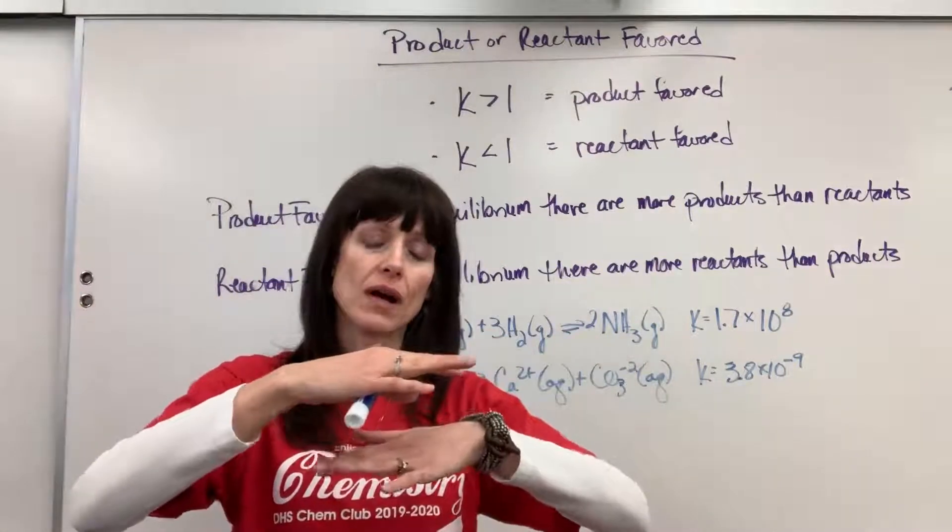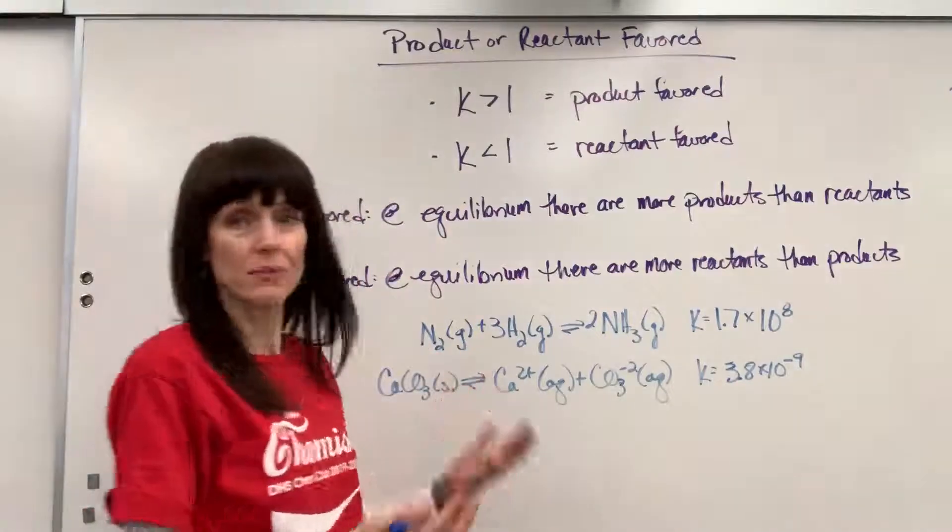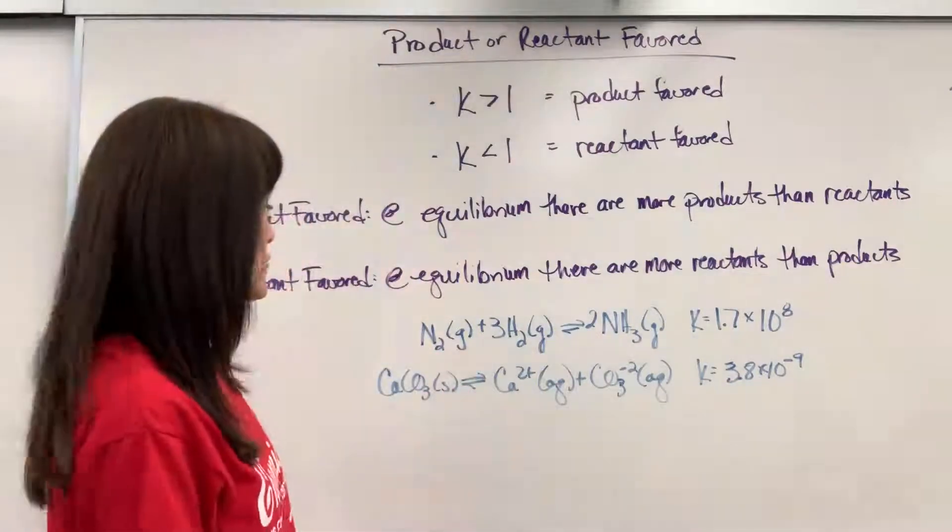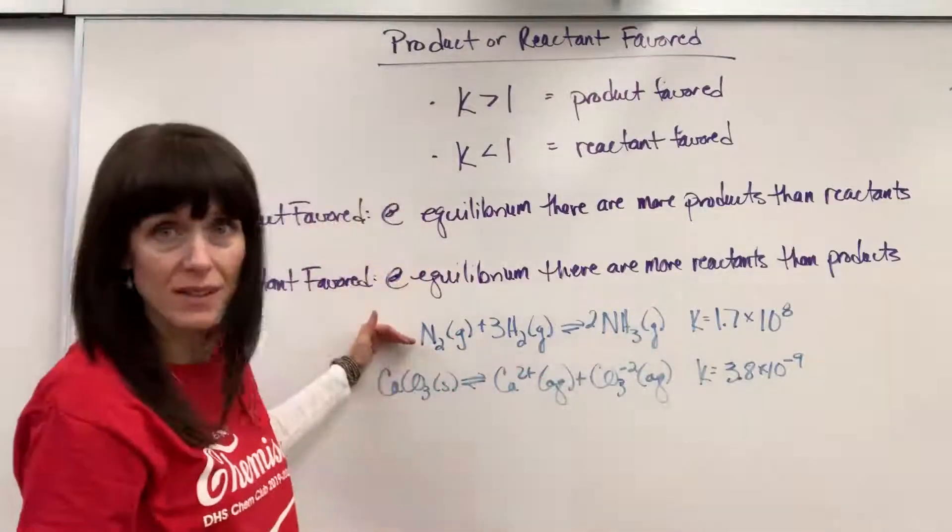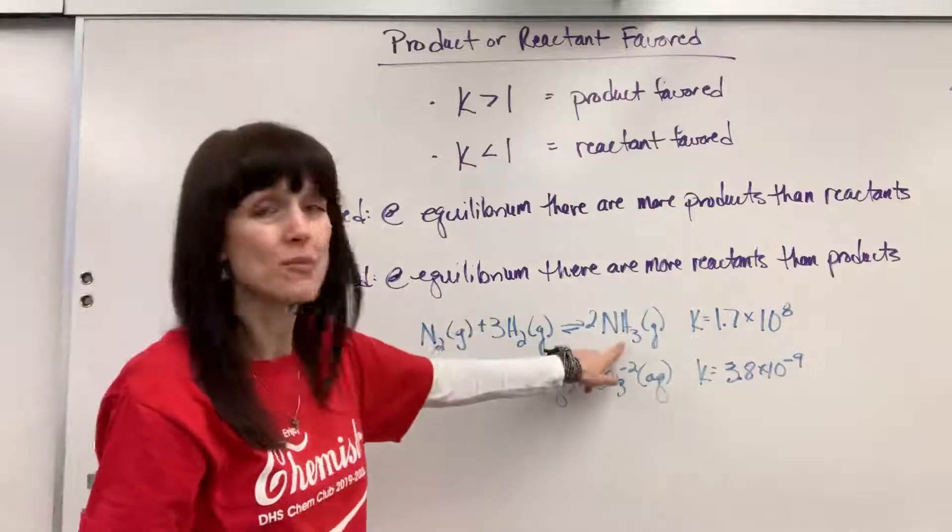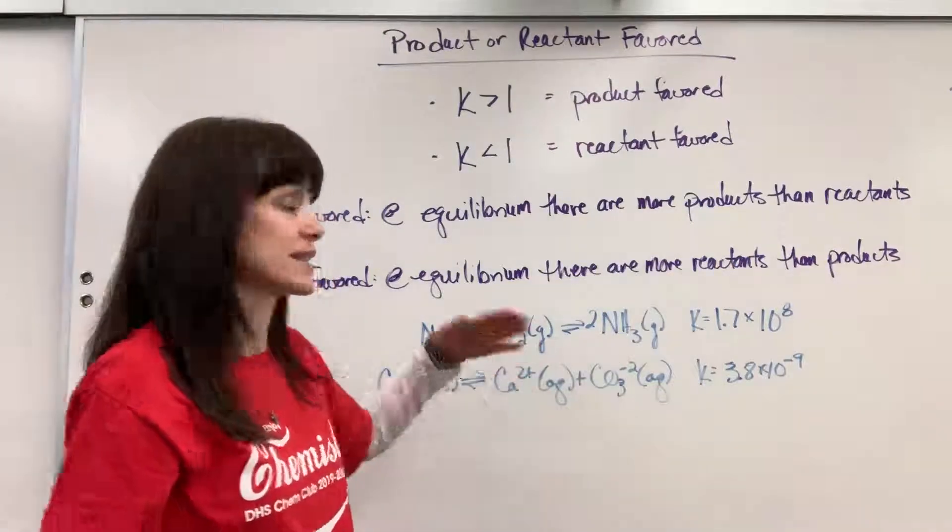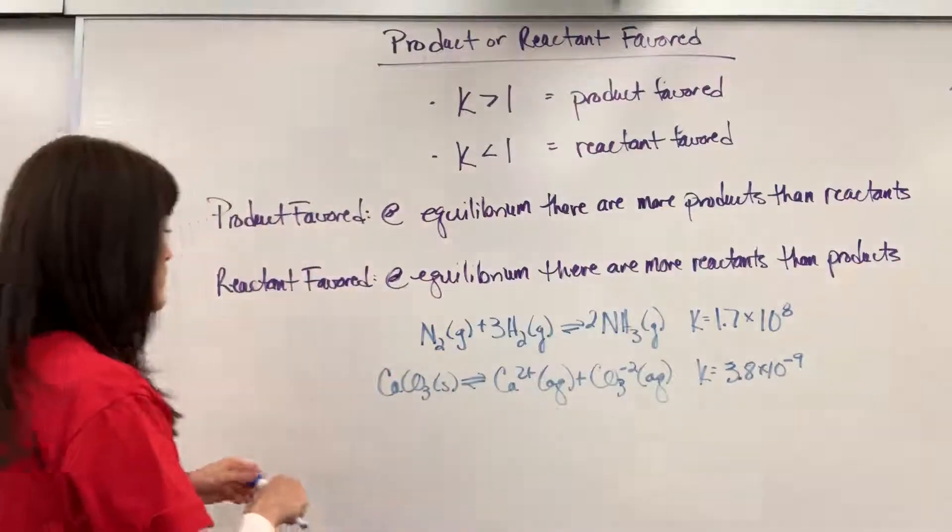So when we're at that beautiful equilibrium, we compare amounts. Well, which one do you have more of? In this situation, notice K is significantly greater than one. So that tells us we have a lot more products than we do reactants when we are at equal rates.